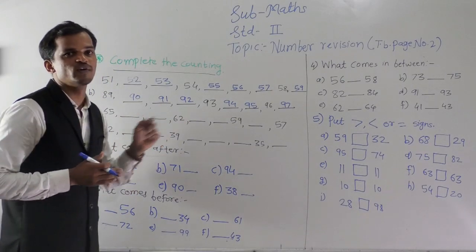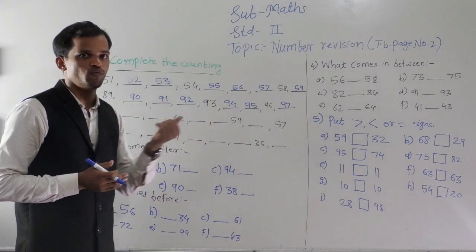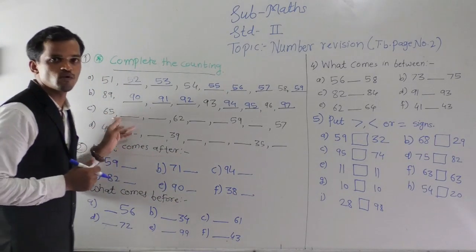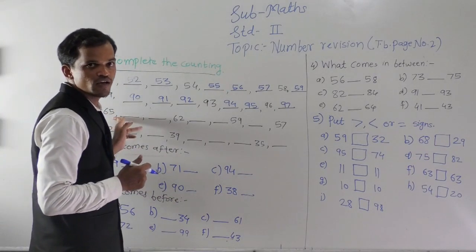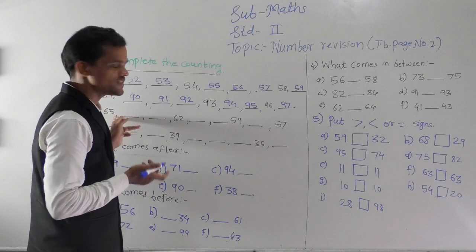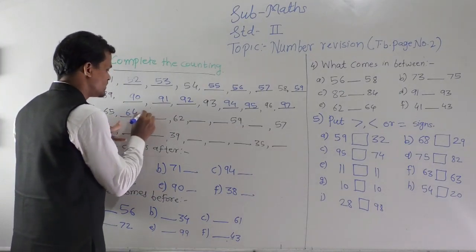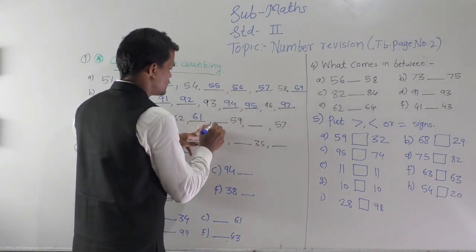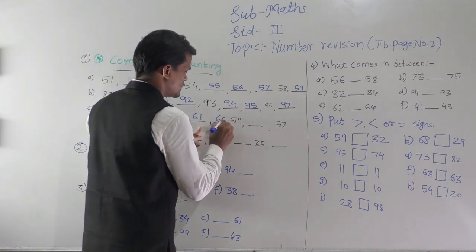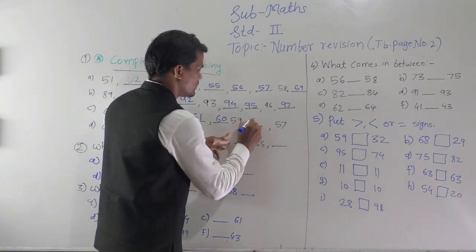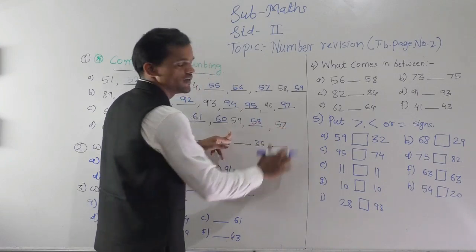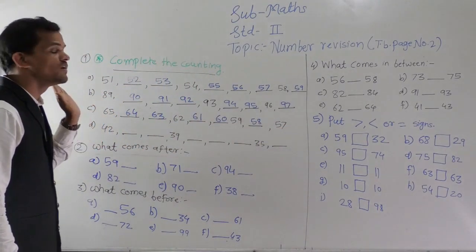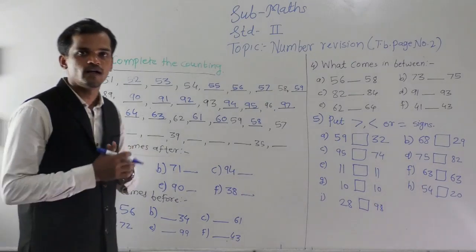Every time you have to write the number that comes before the given number. See 65 — before 65, which number comes in our number series? That is 64, 63, 62, 61, 60, 59, 58 and 57 is already given. Understood? This is the backward counting.